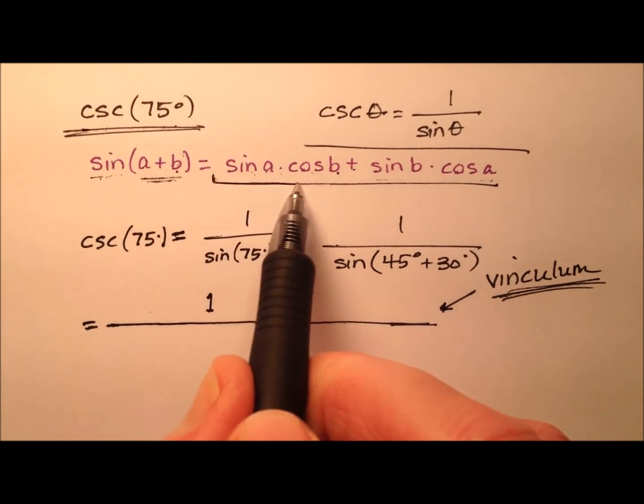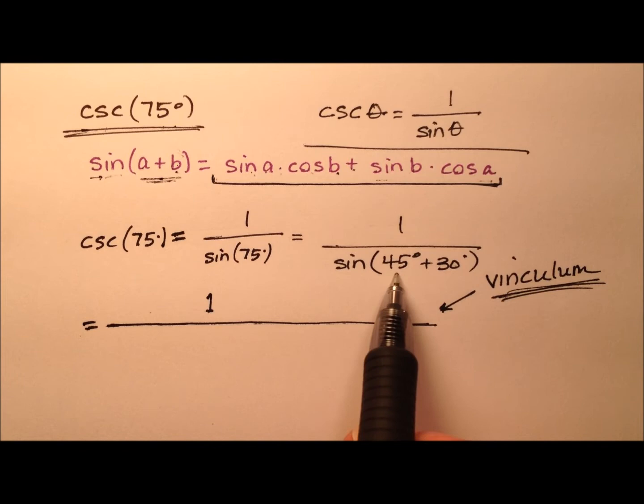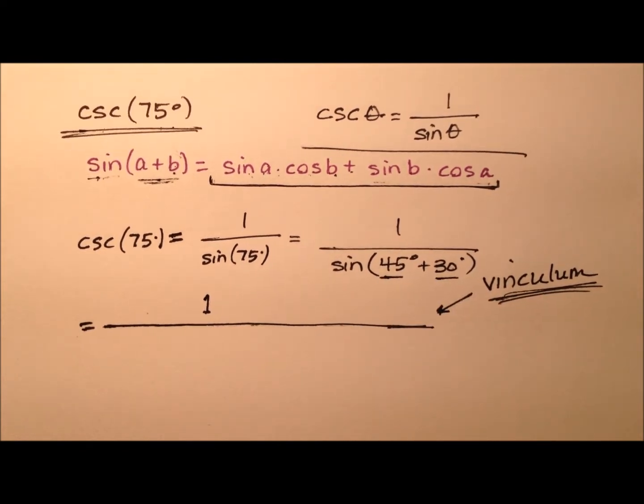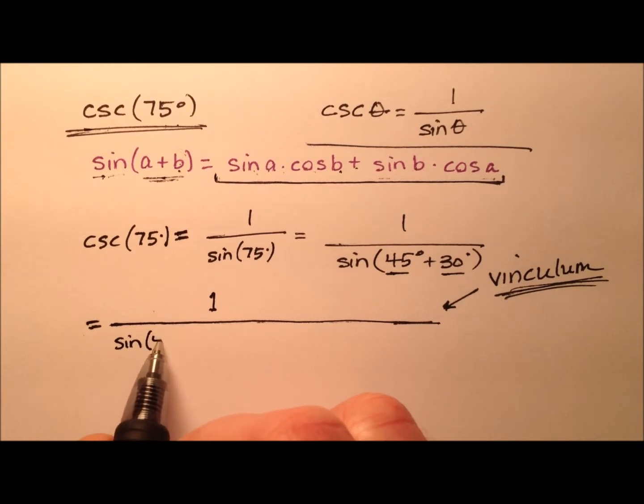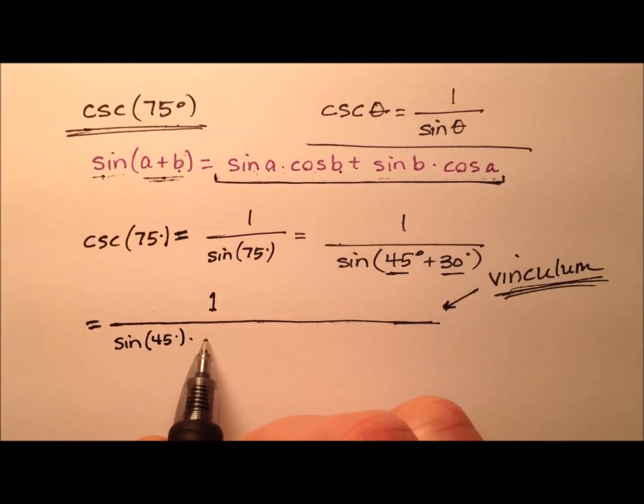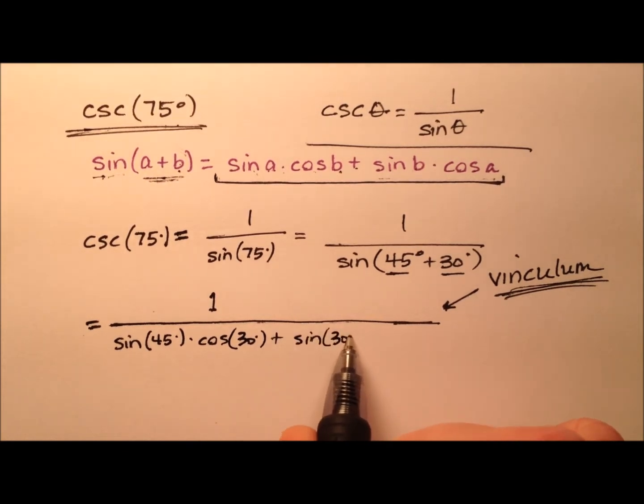We're going to use this expansion formula for the sum identity for sine, and here's our angle a and our angle b. So we have the sine of 45 degrees times the cosine of 30 degrees plus the sine of 30 degrees times the cosine of 45 degrees.